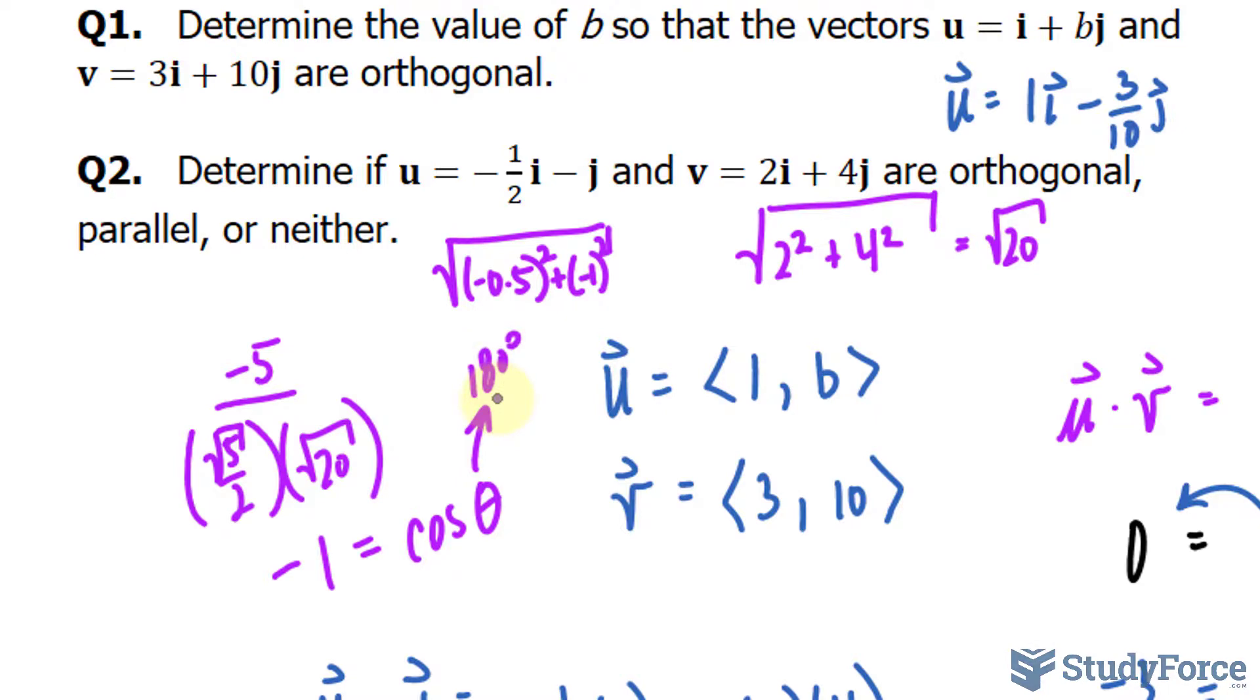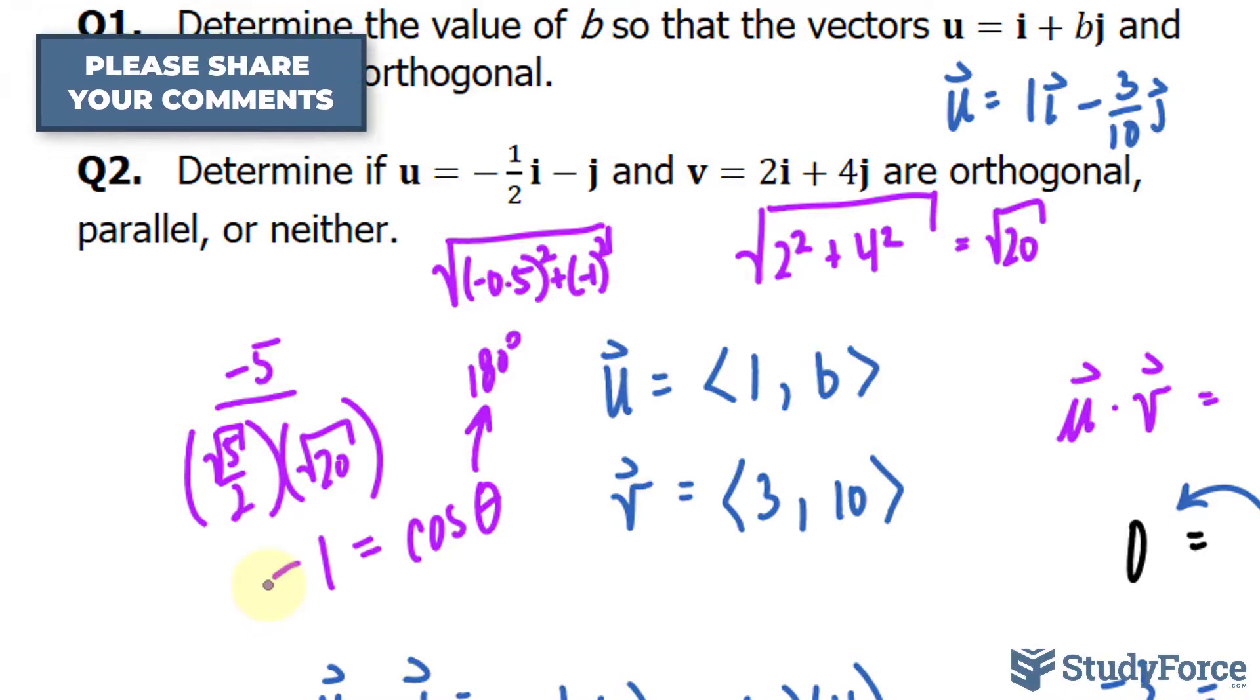Given that we get 180 degrees or negative 1 on the left side, this suggests that these two vectors are, in fact, parallel.